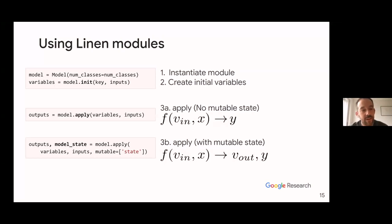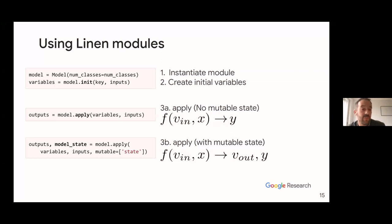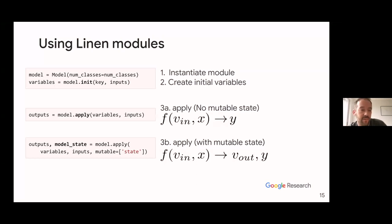In setup you define all your sub-modules — you might wonder why it's not called init, and that's because data classes take over init, so we use setup. You can treat it like init. In this code example, we have a ConvNet and a fully connected Dense layer — self.conv and self.fc. When you run the forward pass in call, you get your inputs X, run through the ConvNet, apply an activation function, reshape it, and run it through the fully connected layer, returning a log softmax over your classes.